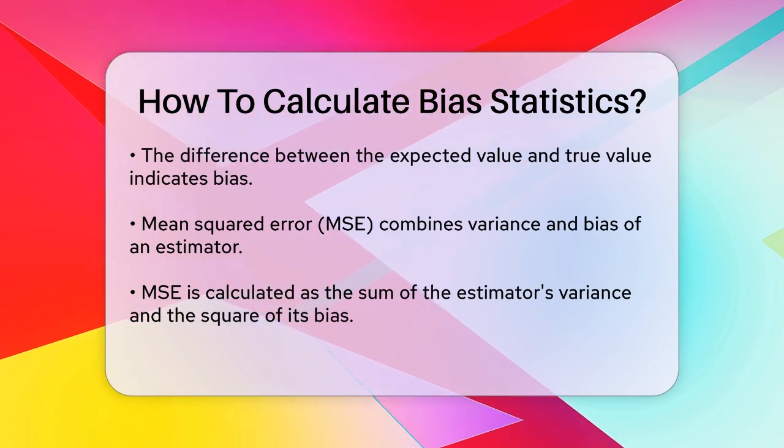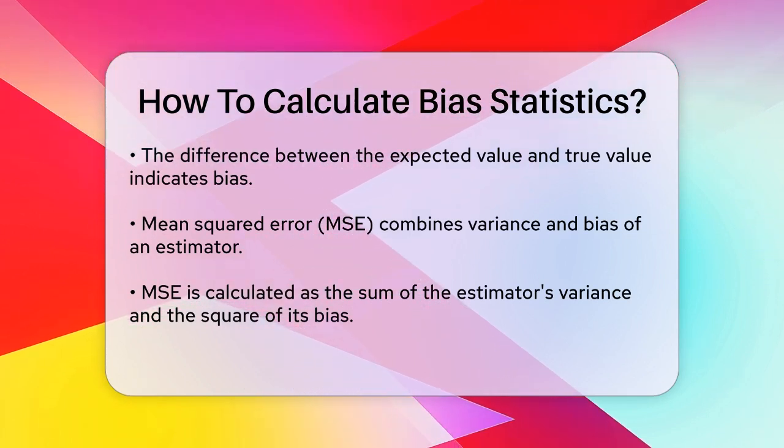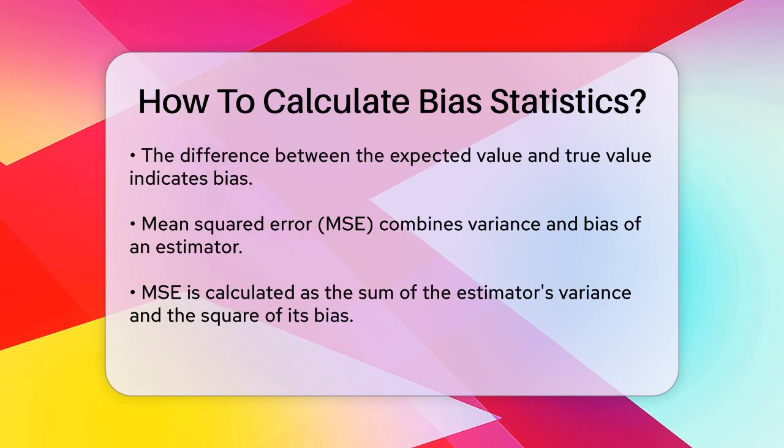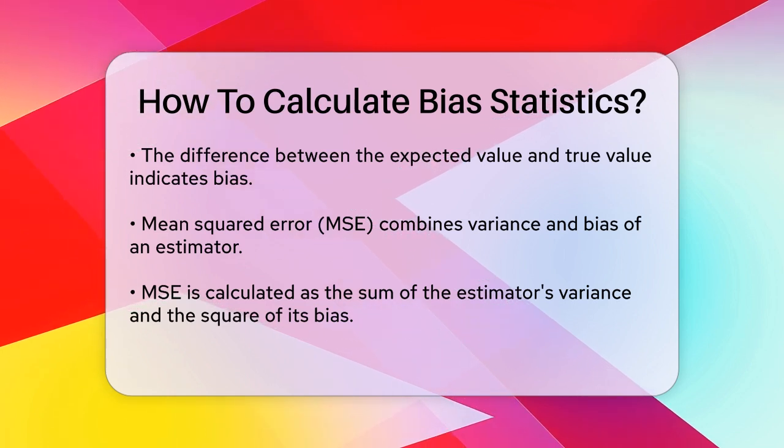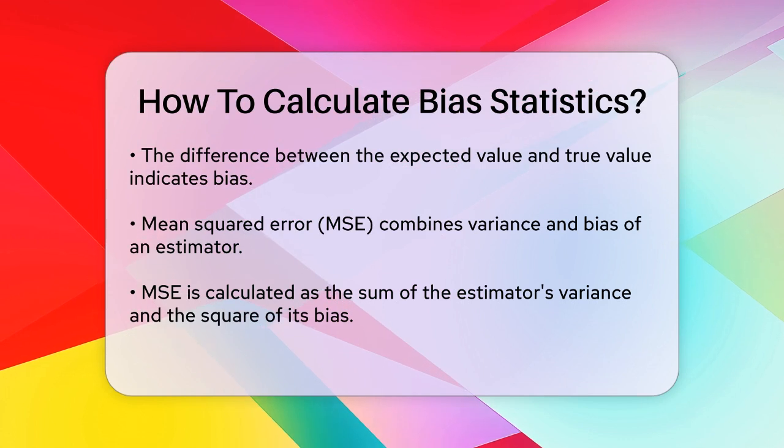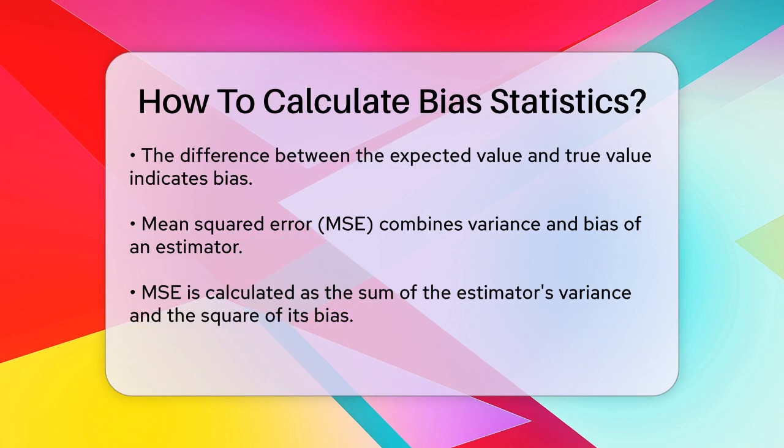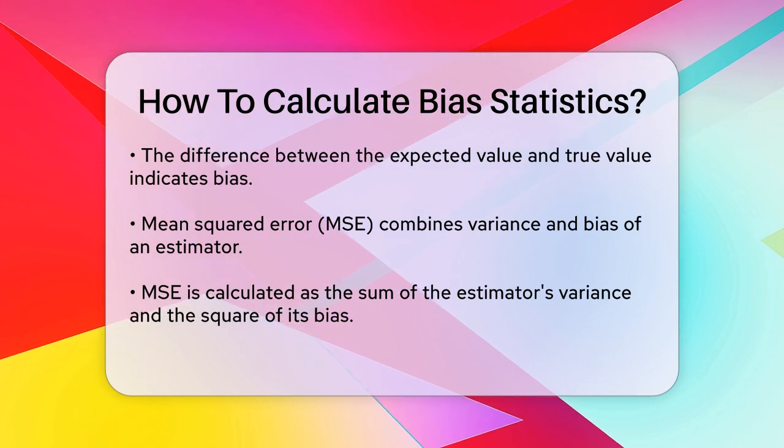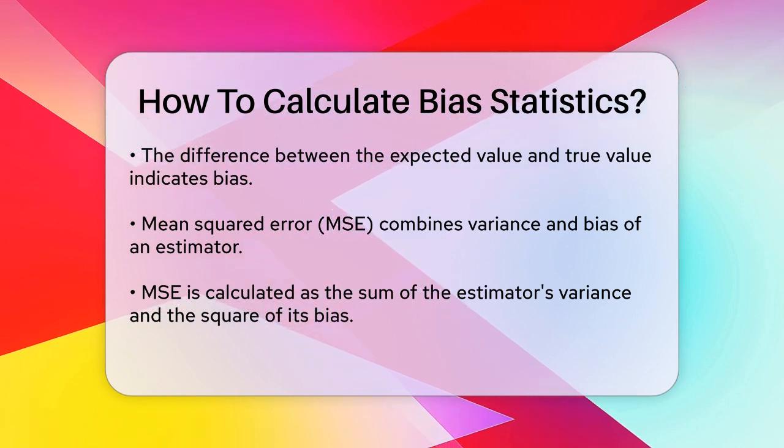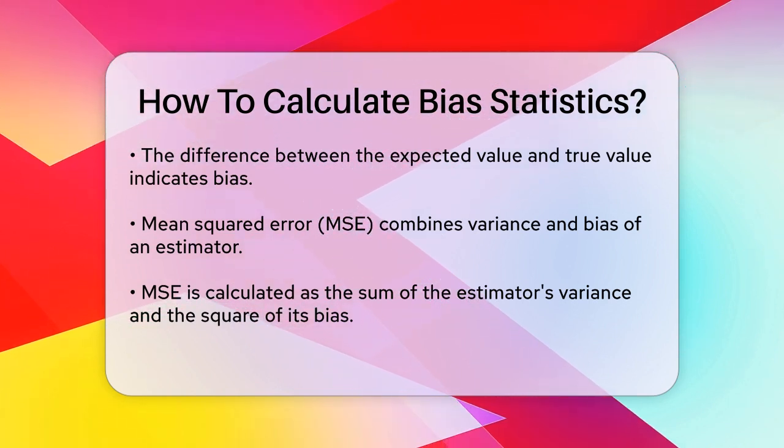Another way to think about it is through the mean squared error, MSE, which combines both the variance and the bias of an estimator. The MSE is calculated as the sum of the variance of the estimator and the square of its bias. So, even if an estimator is biased, it might still have a lower MSE than an unbiased one if its variance is small enough.